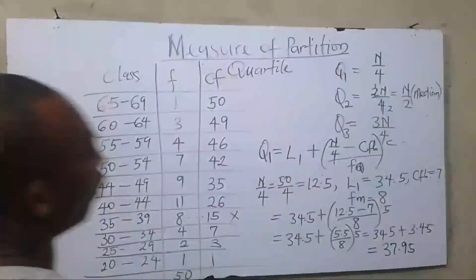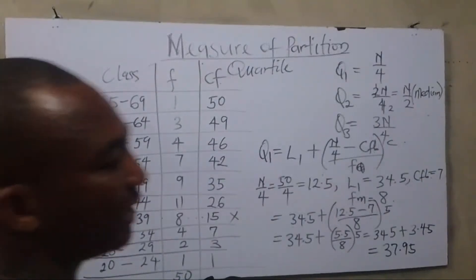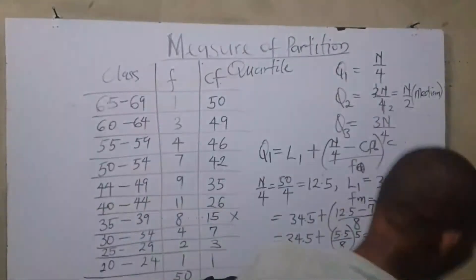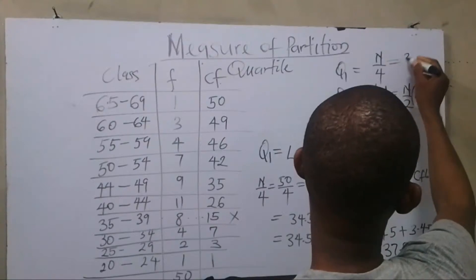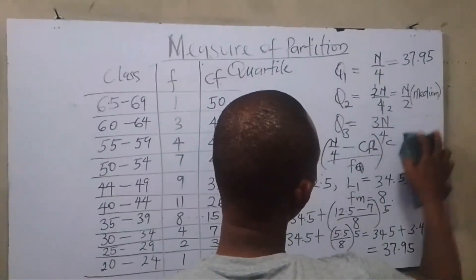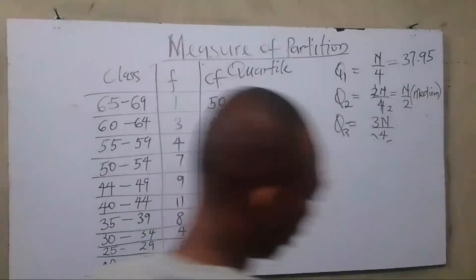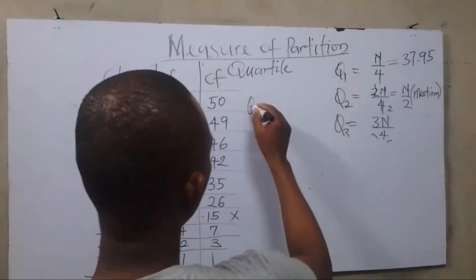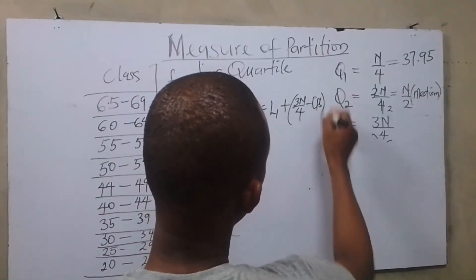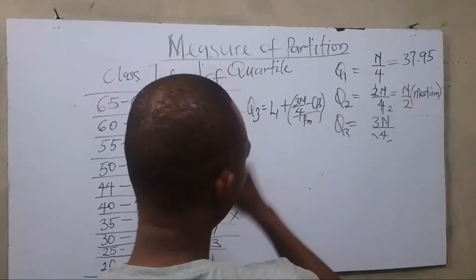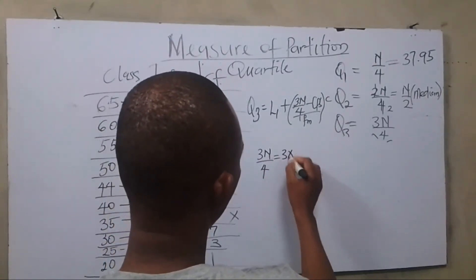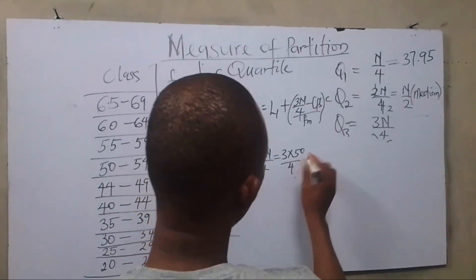I'm done with the first quartile. I don't need the second quartile because I want to find the inter-quartile range and the semi-inter-quartile range — that is the main target. So Q1 is 37.95; I need to note this down so that when I want to find the semi-inter-quartile range I won't have any issues. Now let me move on to the third quartile. The formula is: lower class boundary plus [(3n over 4 minus cumulative frequency before that class) divided by frequency of the third quartile class] multiplied by class size.